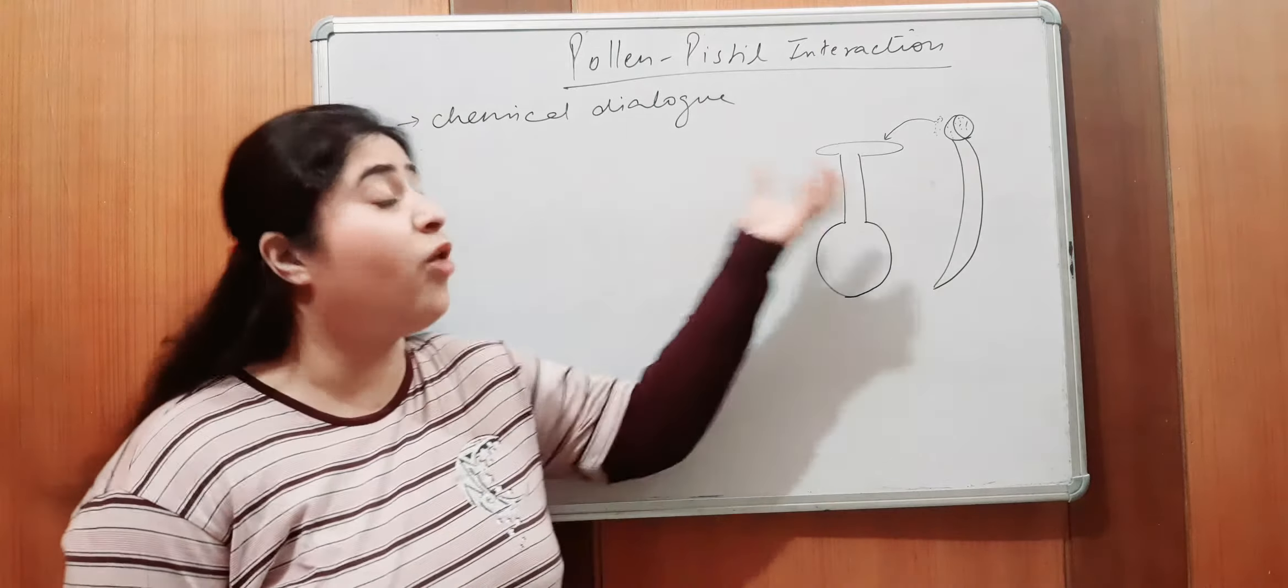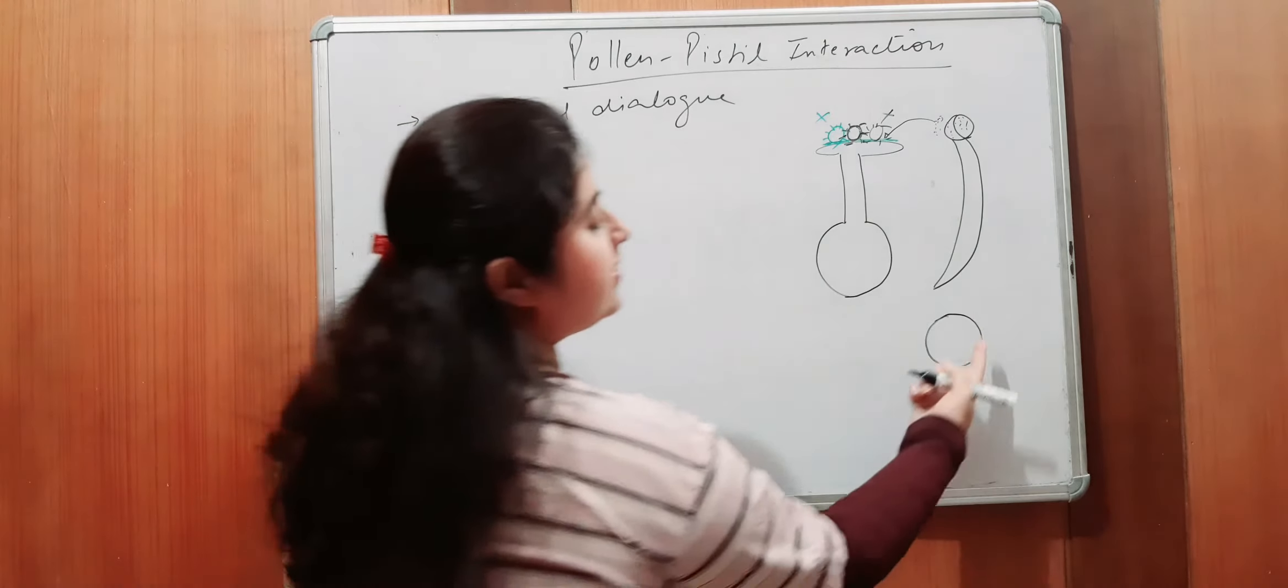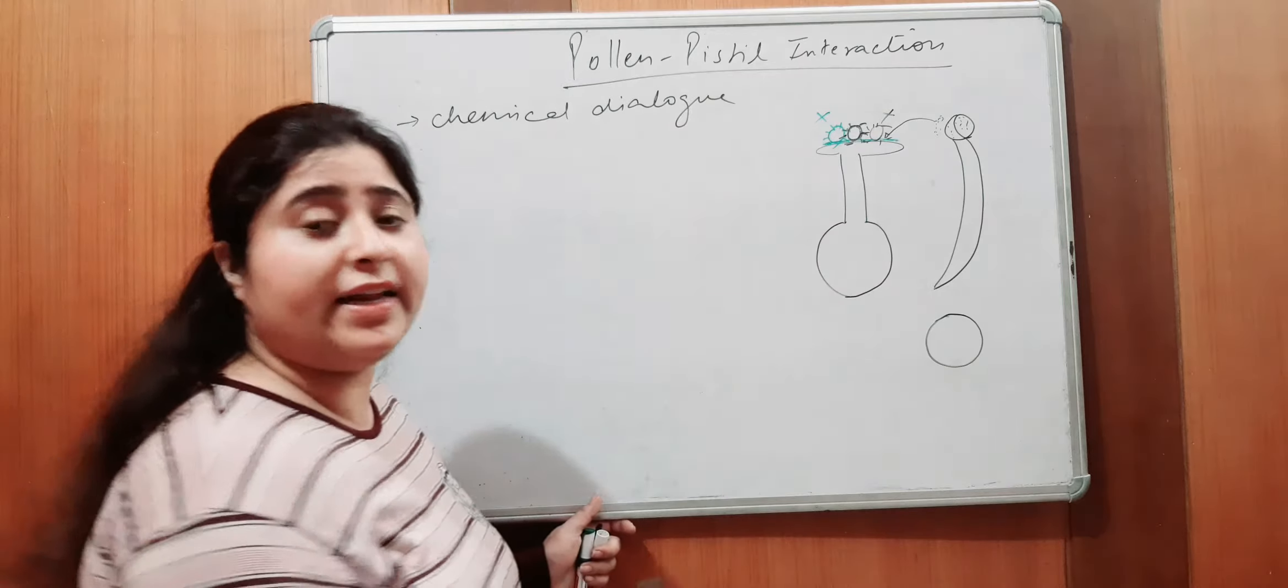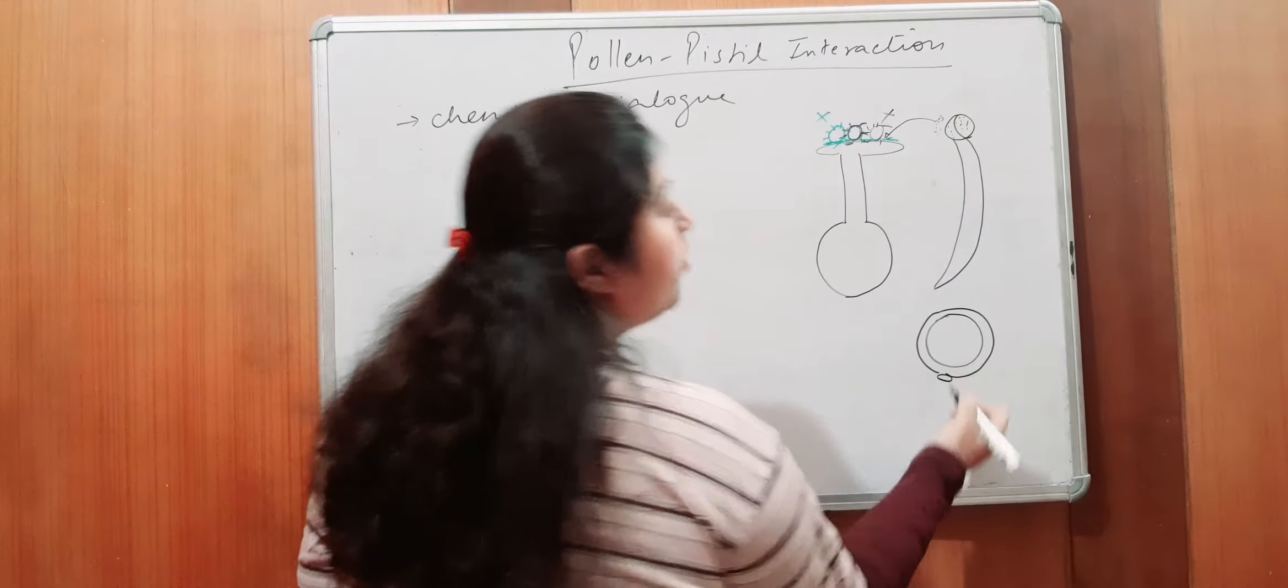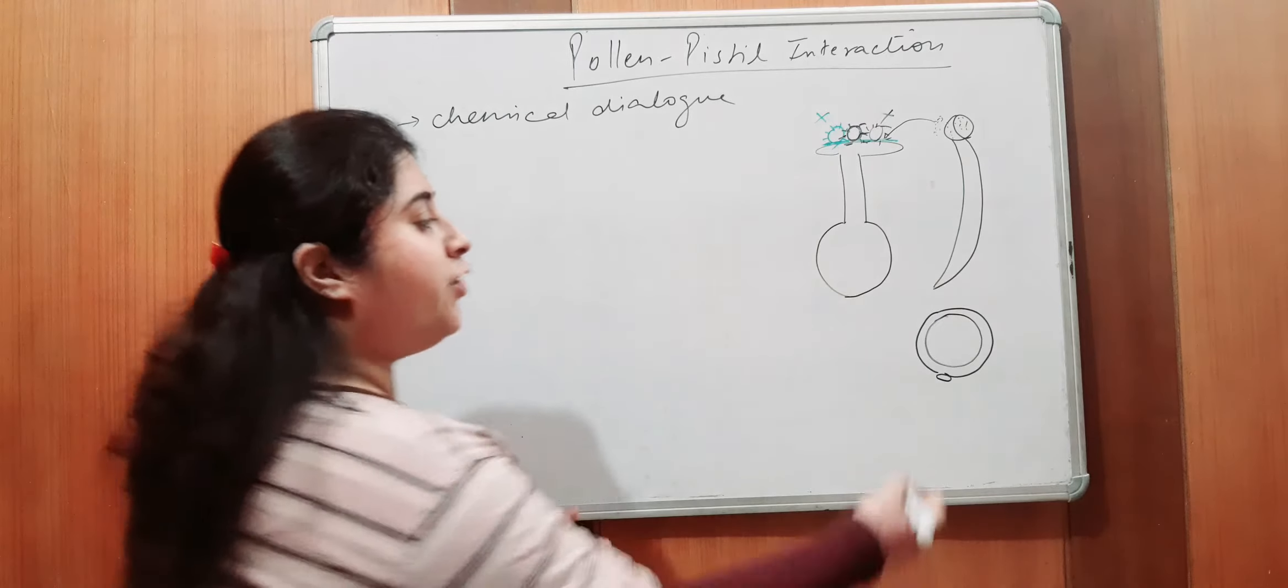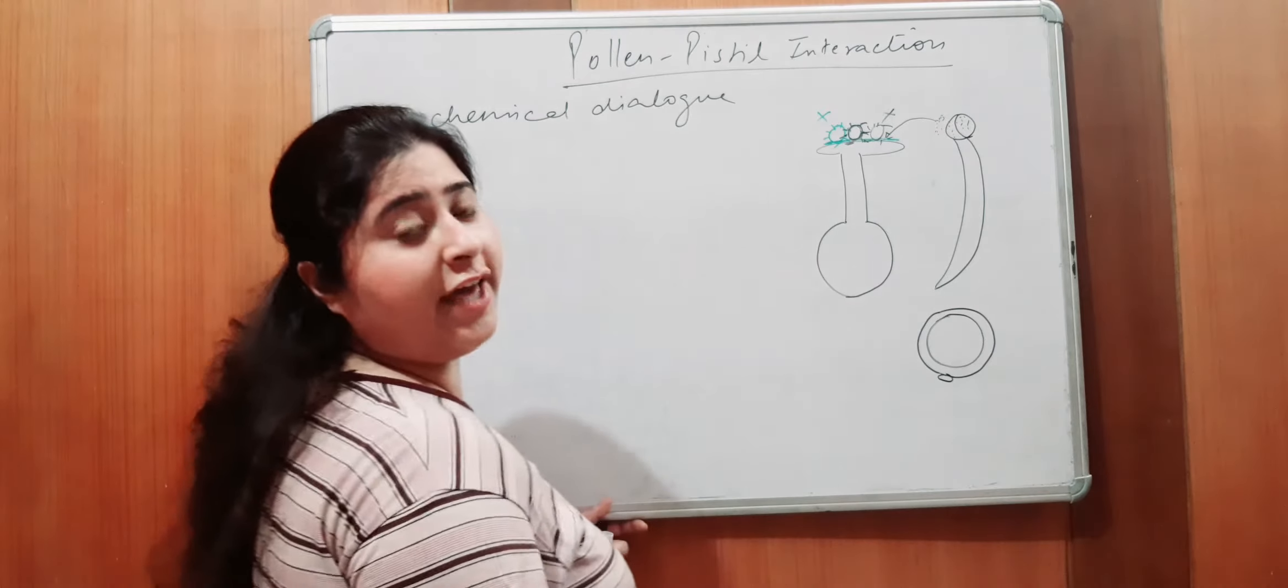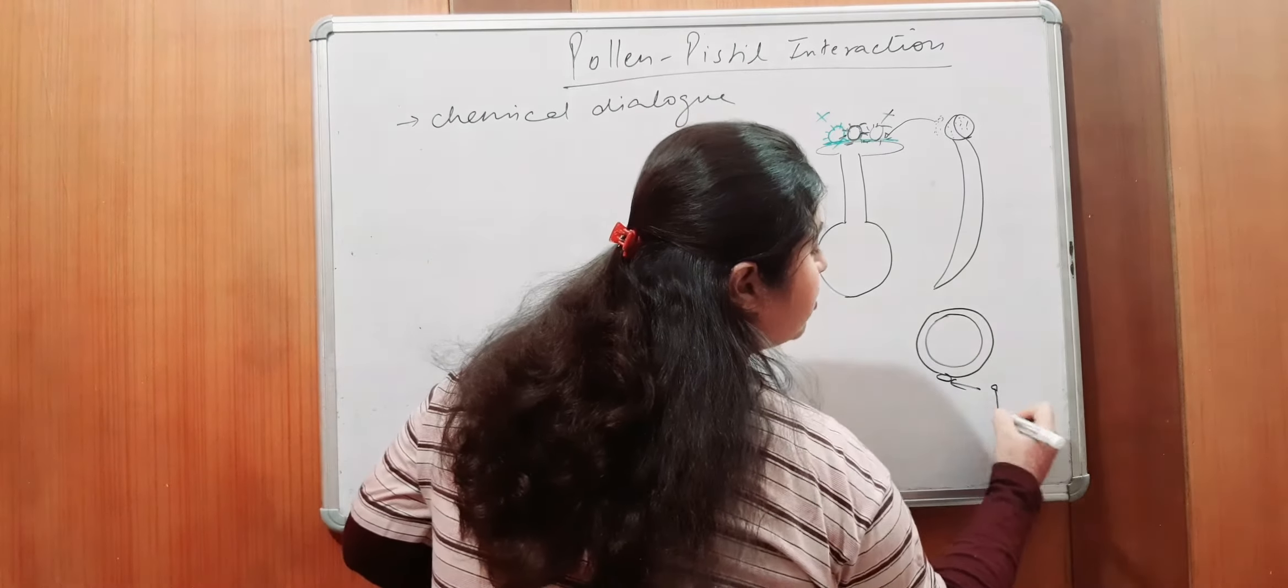Now the question is, pollen grain ka koon sa part hai which arises this pollen tube. Toh ek baare hi phir se recall kertte hai, pollen grain ka hummei outer structure kiya tha ki pollen grain ni dho walls hoti hai. One is the inner continuous wall, which is made up of cellulose and pectin. Another one is the outer discontinuous layer, which is having a pore. Right? That exine, outer wall is exine made up of sporopollenin, resistant organic material. Toh discontinuity mein, ismei joo space hoti, ismei joo pore hota hai, which acts as a gate, which will pass the materials to allow enter or outside. That pore is called as germ pore.